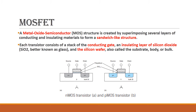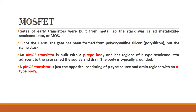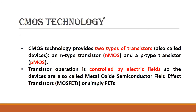MOSFET comes in two flavors: N-MOS transistor and P-MOS transistor. For an N-MOS transistor, a P-type substrate is taken and two N-plus regions are diffused for source and drain. The gates of early transistors were built from metal, which is why it is called Metal Oxide Semiconductor Field Effect Transistor, but nowadays polycrystalline silicon or polysilicon is used instead.